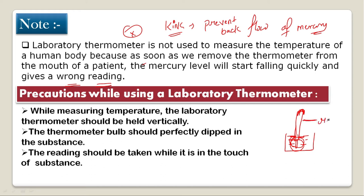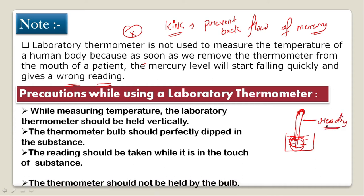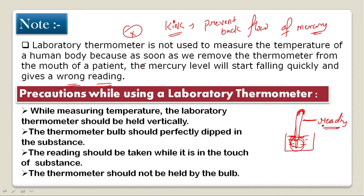We cannot take the reading from below or above — we must read it at eye level. The thermometer should not be held by the bulb. We place it in the stand or glass holder and take the reading from there. These are the key precautions when using a laboratory thermometer.